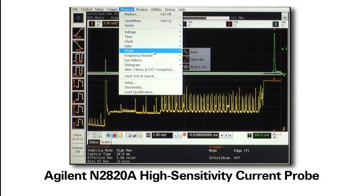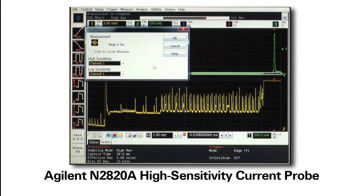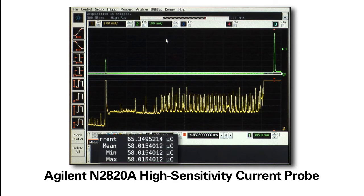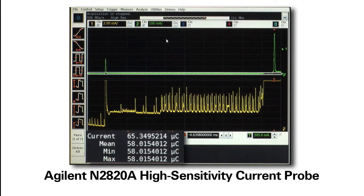With current waveforms captured, you now want to calculate the average current consumption of the system over time. Agilent's Infinium scope provides an area under a curve measurement where you can easily calculate the integrated current consumption over time.